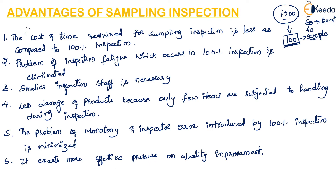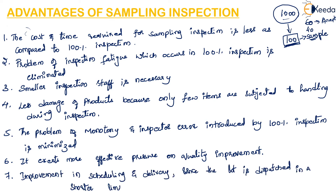Another advantage is improvement in scheduling and delivery, since the lot is dispatched in a shorter time due to sampling inspection. In summary, the most important advantages of sampling inspection compared to hundred percent inspection are the reduction of cost and time, and the fact that it exerts more pressure on quality improvement.